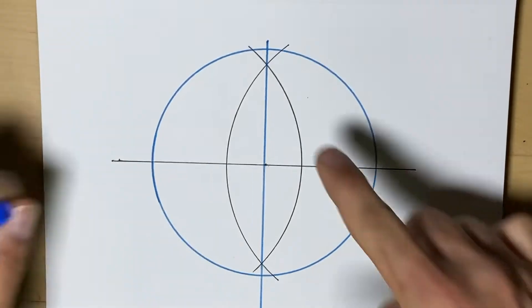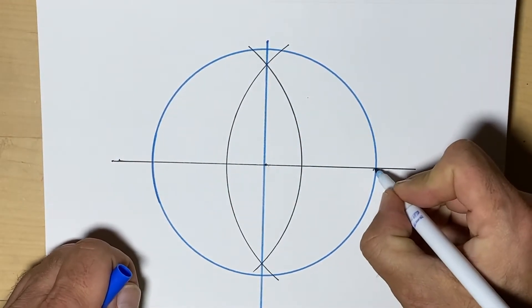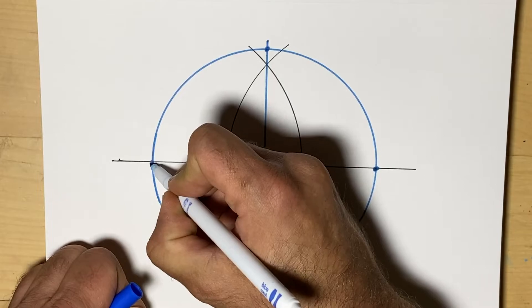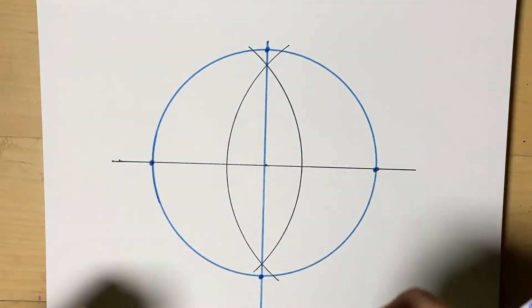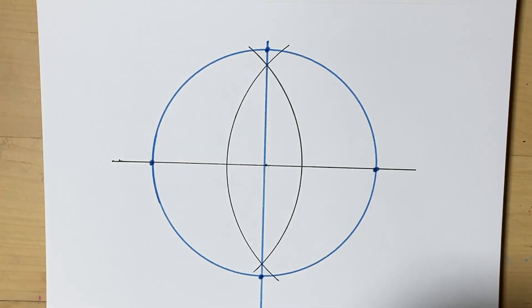Now because we have this even circle, we can take this spot, this spot, this spot, and this spot that are now evenly apart, and connect them to make a square.